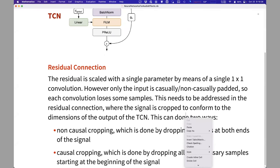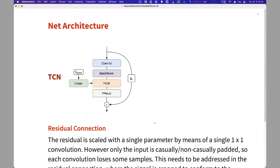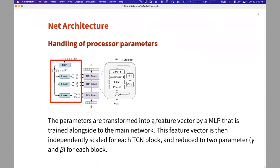Again, the causal one is usually the one that is used for real-time applications. So this is the TCN.